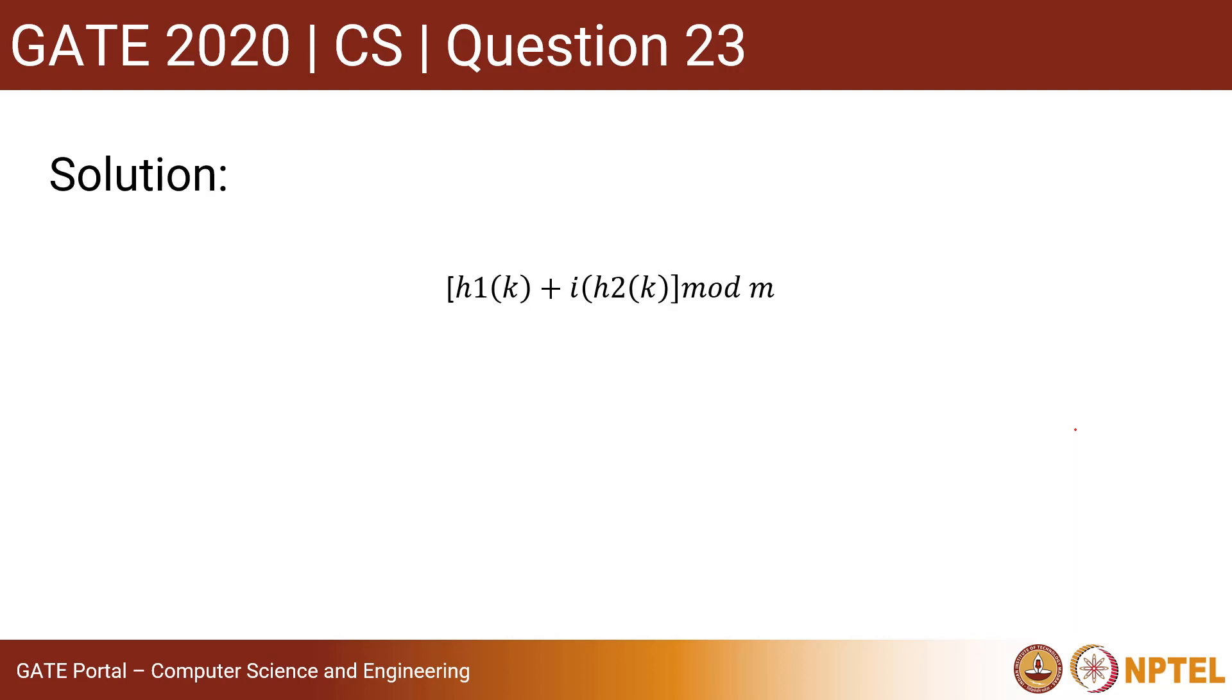Now let's jump into the solution. We already know that the probe sequence for double hashing is given by this expression. Now let's see what information is given in the question.